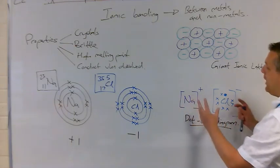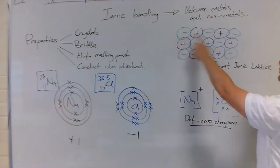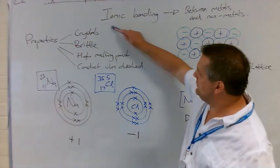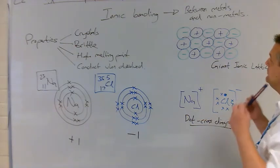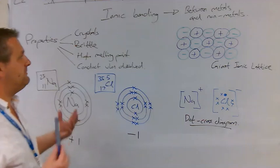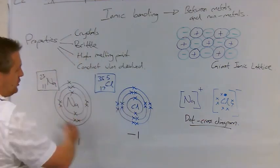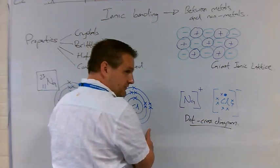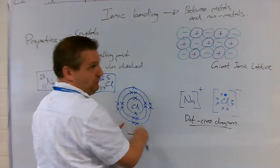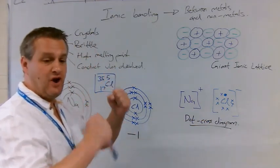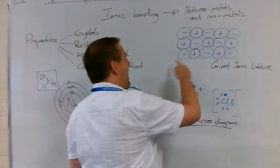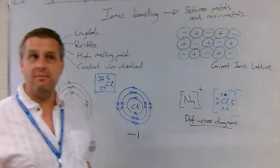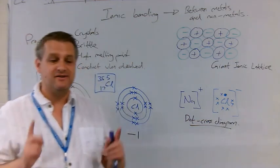Quick reminder of what we've covered for ionic bonding: properties, structure, and how to explain the properties using the underlying science. Key points: ionic bonding involves give and take of electrons — metals lose electrons and become positive ions, non-metals take them and become negative ions. They stick together because opposite charges attract via electrostatic force, which is very strong. They form a giant ionic lattice in 3D. We've got two more types of bonding to do — next up, covalent bonding.